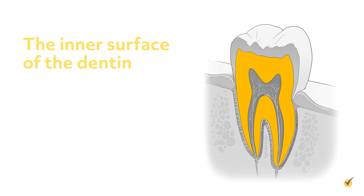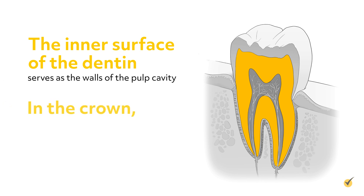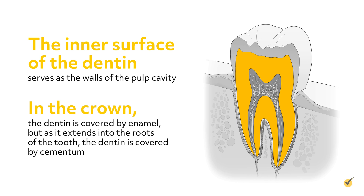The inner surface of the dentin serves as the walls of the pulp cavity. In the crown, the dentin is covered by enamel, but as it extends into the roots of the tooth, the dentin is covered by cementum.